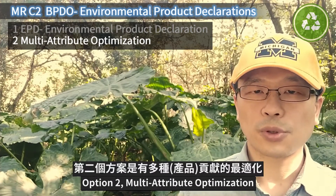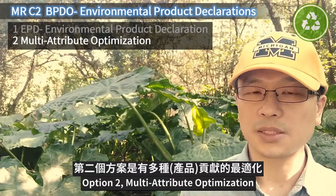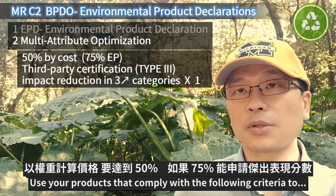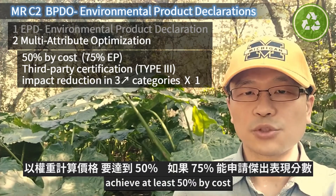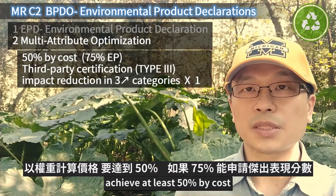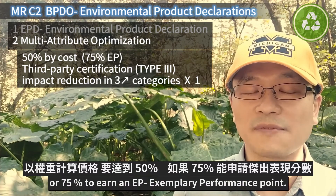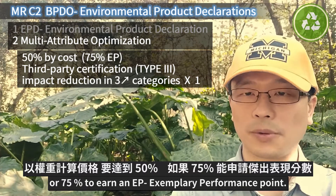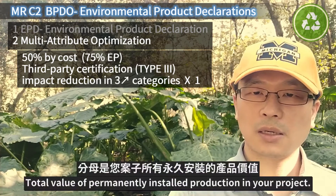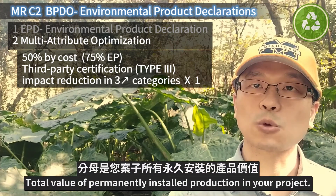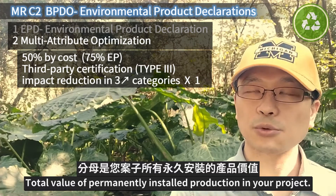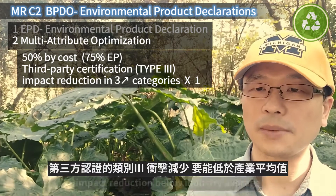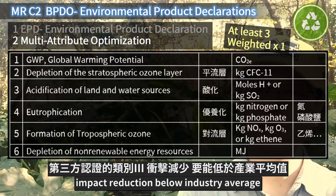Option two: multi-attribute optimization. Use products that comply with the following criteria to achieve at least 50% by cost, or 75% to earn an EP Exemplary Performance Point of the total value of permanently installed products in your project. Criteria include third-party certification Type 3 and Type 3 impact reduction below industry average.